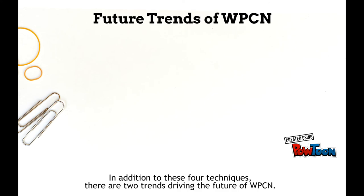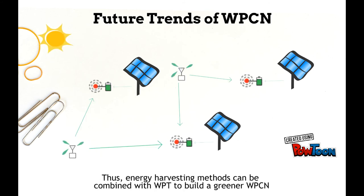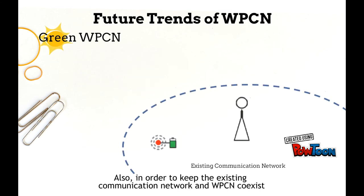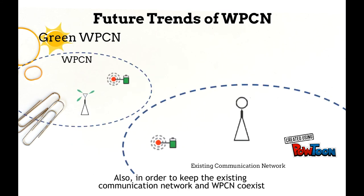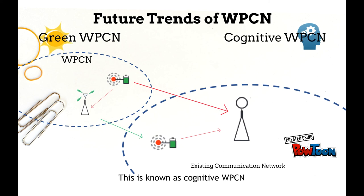In addition to these four techniques, there are two trends driving the future of WPCN. Green energy has sparked interest as a core topic among the public, and green energy harvesters can be combined with WPT to build a greener WPCN. Also, in order to keep the existing communication network and WPCN co-existing, WPCN should be made cognitive so that interference between them can be avoided. This is known as cognitive WPCN.